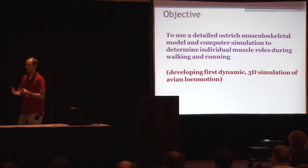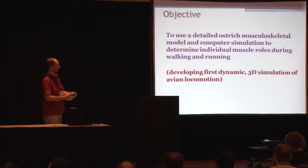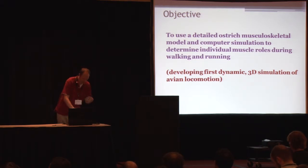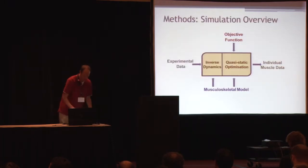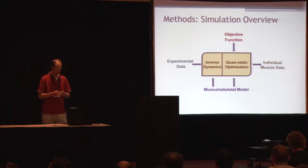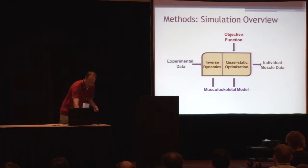The objective of this study that we've been working on is to first develop a detailed ostrich musculoskeletal model. And second, run it through its paces and create simulations of both walking and running to verify the model's working and also to gain insight to understand how ostriches might be different from humans and other animals. This is the overview of the way that the simulation runs. Basically we'll have experimental data and a musculoskeletal model that we've developed to come together, perform inverse dynamics, and then use a step called quasi-static optimization to parse out the joint torques into muscle forces through some sort of objective function, and then afterwards we can analyze the individual muscle data.